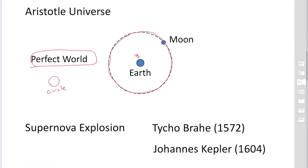At the very end stage of stars, stars explode in supernova explosions. Tycho was a teacher of Kepler's, and he discovered a supernova explosion in 1572. He considered this explosion was happening beyond the orbit of the moon, but he could not believe this observation because it was against the Aristotle universe, so he just could not believe his observations.